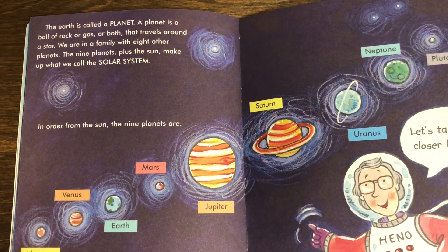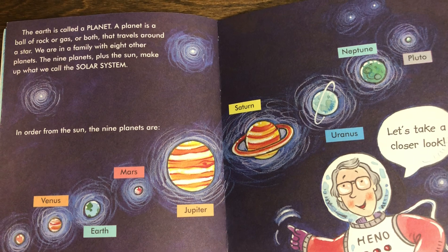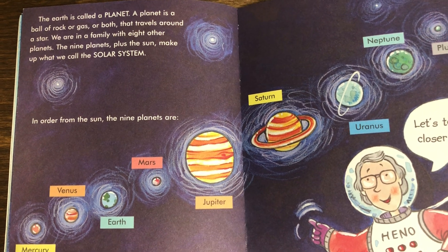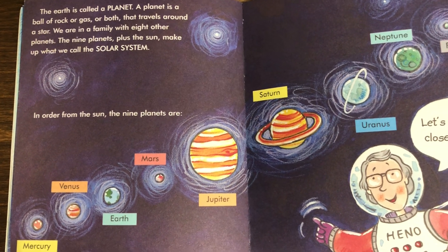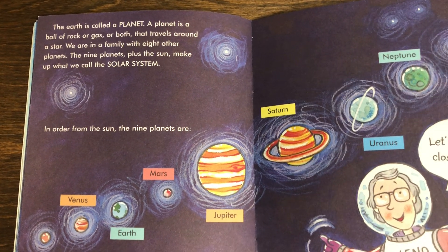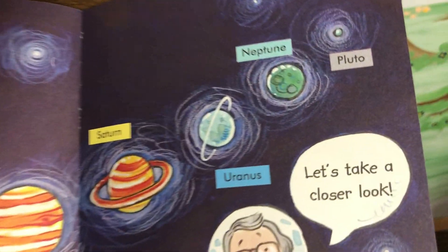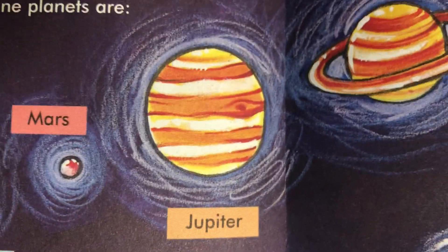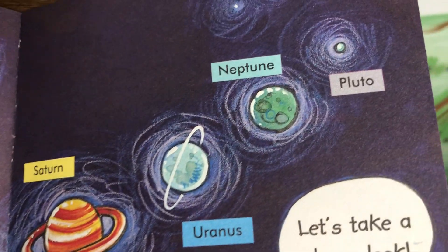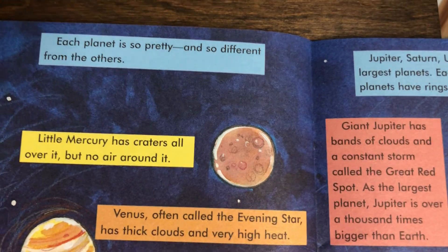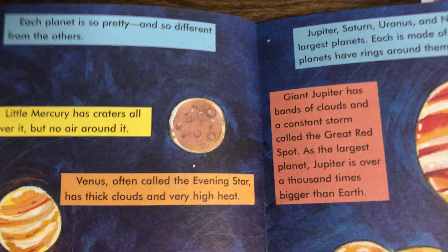The Earth is called a planet. A planet is a ball of rock or gas or both that travels around a star. We are in a family with eight other planets — the nine planets plus the sun make up the solar system. In order from the sun, the nine planets are: Mercury, Venus, Earth, Mars, Jupiter, Saturn, Uranus, Neptune, and Pluto. Let's take a closer look — each planet is so pretty and so different from the others.